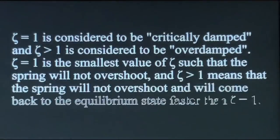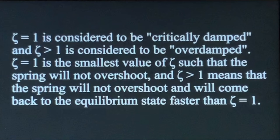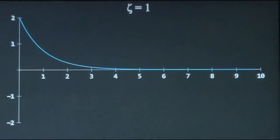When zeta is greater than or equal to one, it is either critically damped or overdamped. When zeta equals one, it is critically damped — it is the smallest value of zeta such that the spring will not overshoot. If zeta is greater than one, the spring returns to equilibrium faster, and like when zeta equals one, it will not overshoot. This is what the graph of zeta equals one looks like.